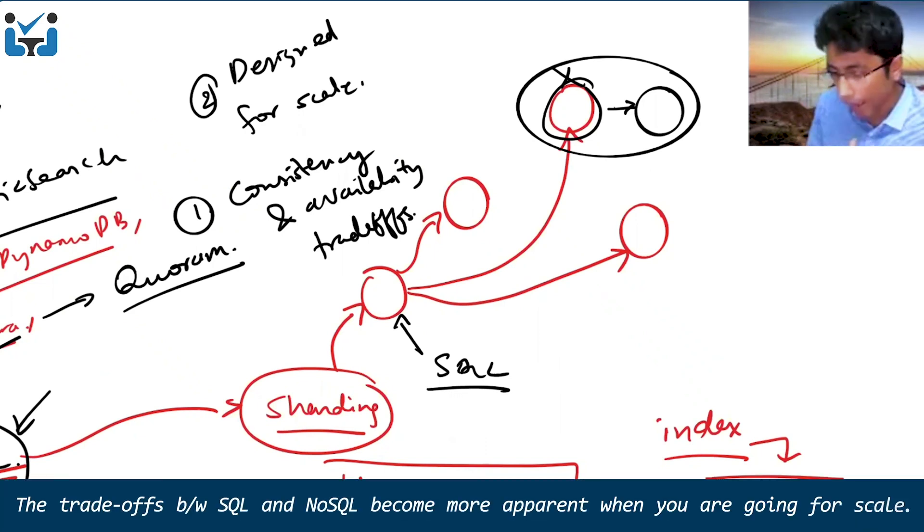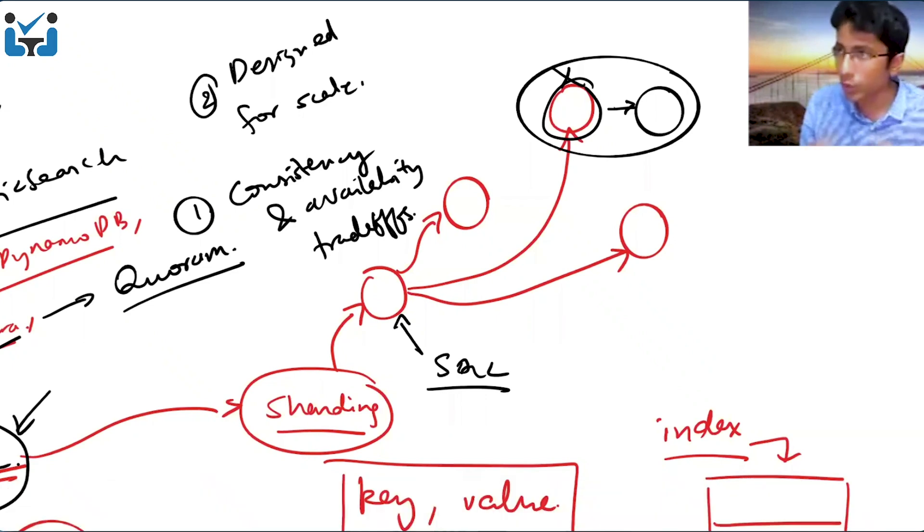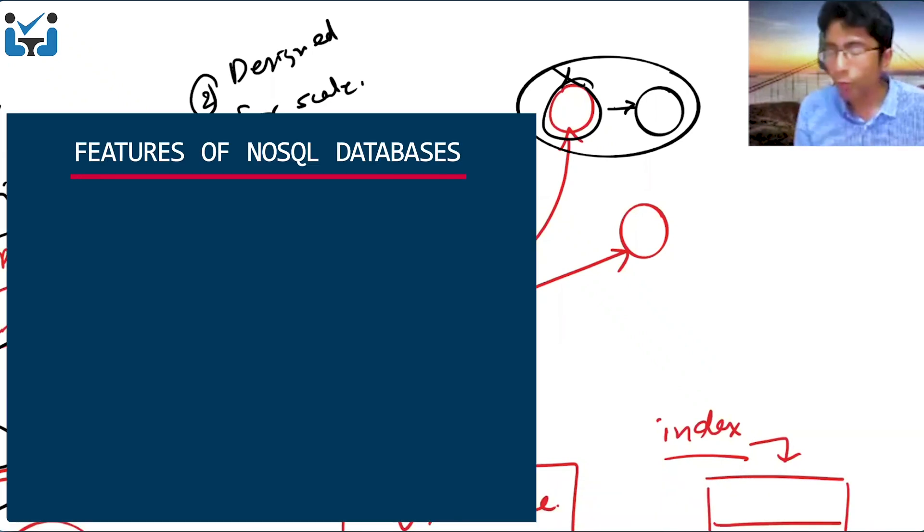The time when they start showing differences, the trade-offs actually start becoming more apparent is when you are going for scale. So there are certain things which are inbuilt in NoSQL databases because more often than not, they're recent. They have come in 2000, they're coming 2010. They know that most companies, most people are looking for a product,